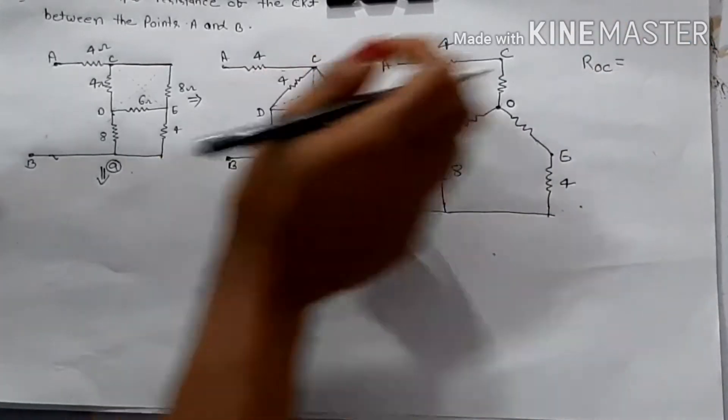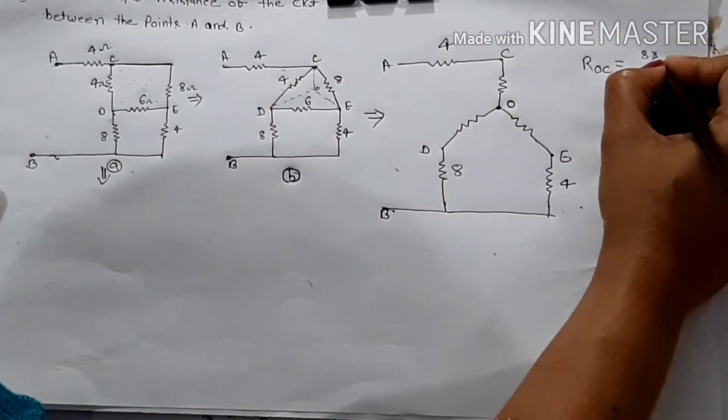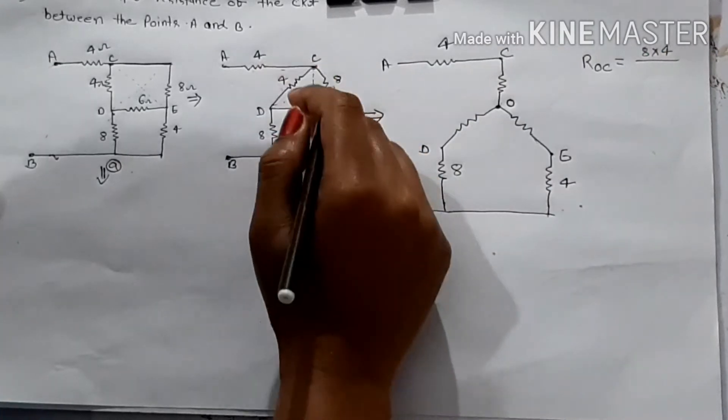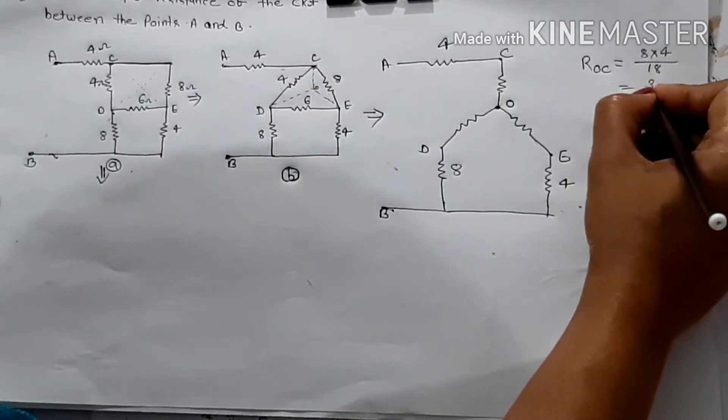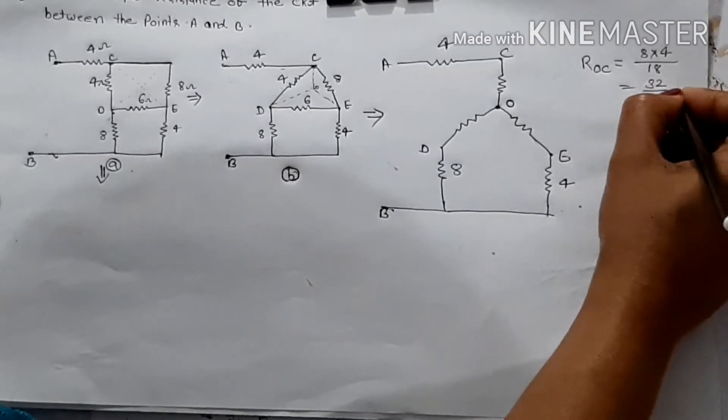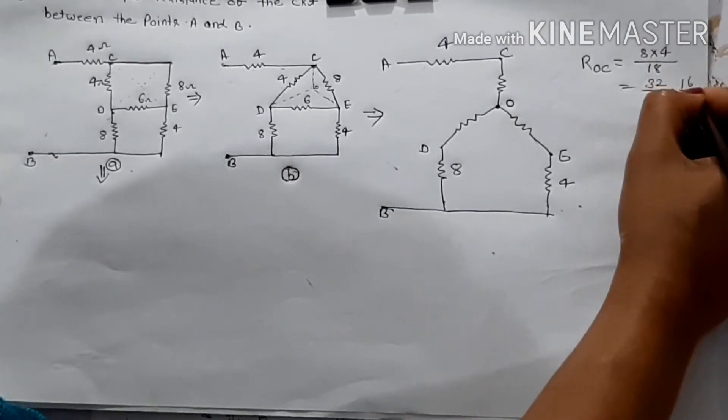equal to 4 into 8, 4 into 8 upon 4 plus 6 plus 8. That means 18. Then 32 upon 18. That means 16 upon 9.